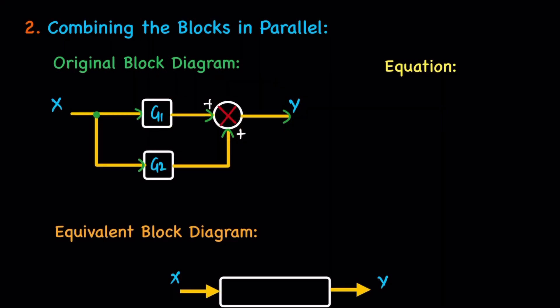Rule two: combining blocks in parallel. In the previous rule, blocks connected in series give a product. When blocks are connected in parallel, we just combine them. For this example, two blocks are connected in parallel and the sign is positive for both, so the final result is g1 plus g2.